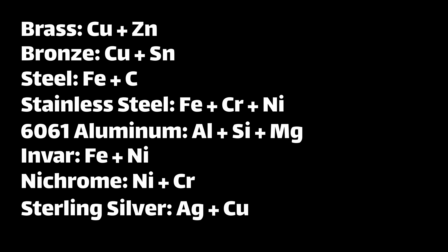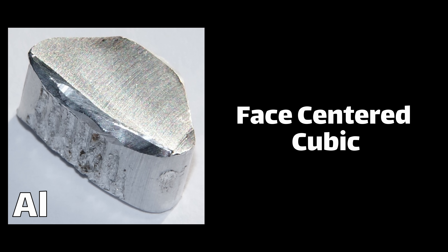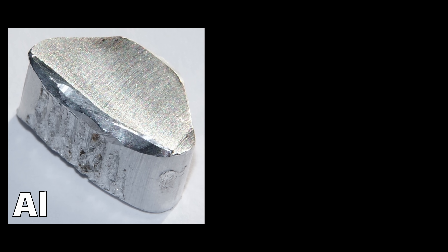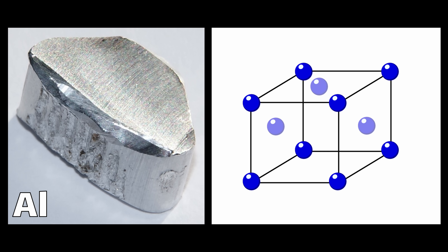If we look at pure aluminum, we can see that it naturally forms what's called a face centered cubic structure. If we visualize a cube and put an atom of aluminum at all the corners as well as on all the faces, that's a face centered cubic. That's what 100% pure aluminum will do by itself.